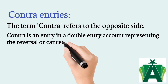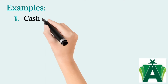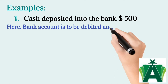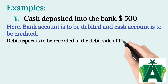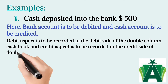Example 1: Cash deposited into the bank $500. Here, bank account is to be debited and cash account is to be credited. The debit aspect is to be recorded in the debit side of the double column cash book, and the credit aspect is to be recorded in the credit side of the double column cash book.